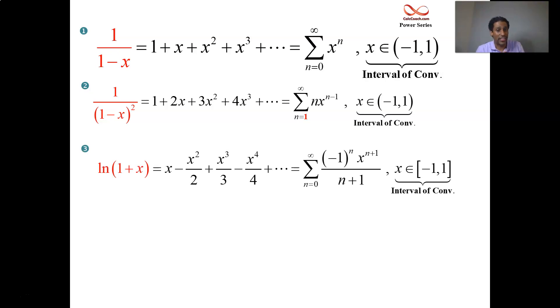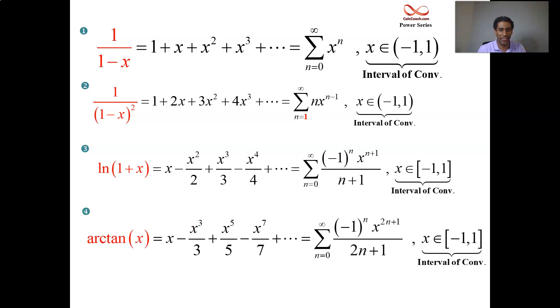And then integrated it to get the natural log power series. And if you check the endpoints there, you'll get conditional convergence on the endpoints for both of them, just like with the arctan series. This is half of the ones we'll need. We'll get about eight of them. The other four will come from Taylor series.